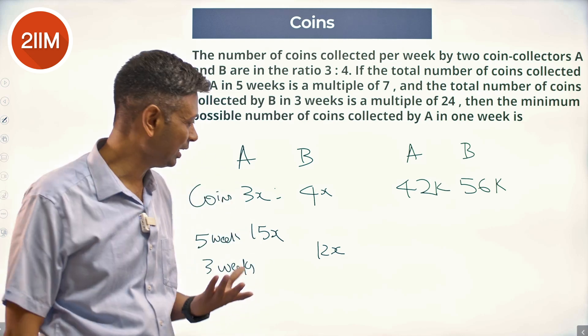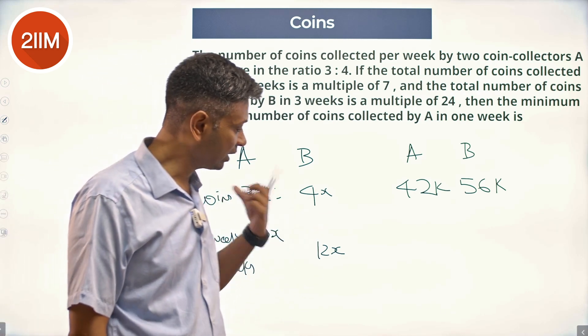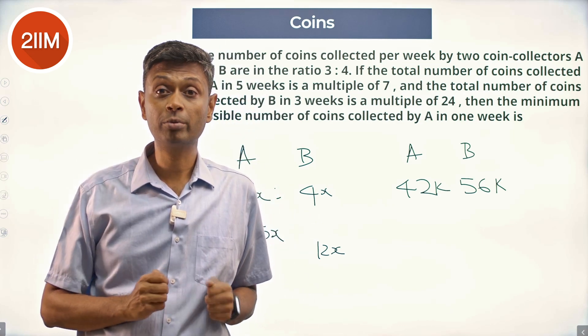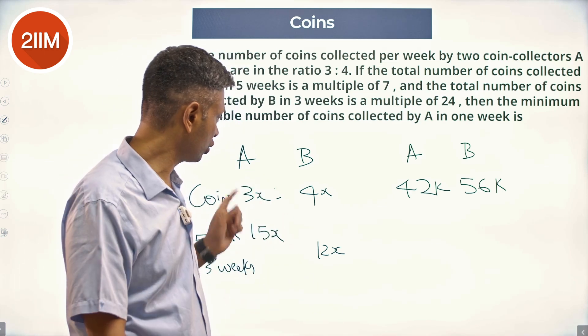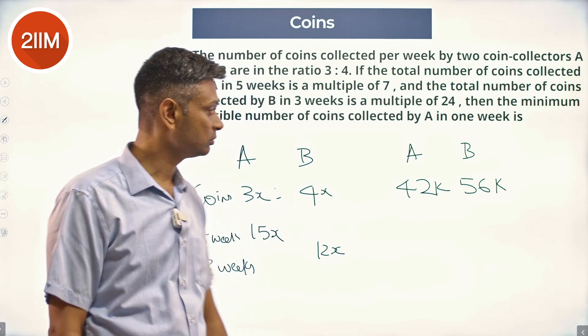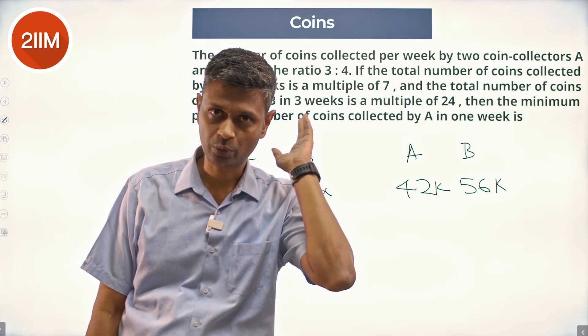What are we doing here? We are basically saying 15x is a multiple of 7, x is a multiple of 7. 12x is a multiple of 24, x is a multiple of 2. X is a multiple of 7 and a multiple of 2, x has to be a multiple of 14. So x can be written as 14k, 3x is 42k, 4x is 56k. What is the minimum number? 42k minimum can be 42 when k is 1.